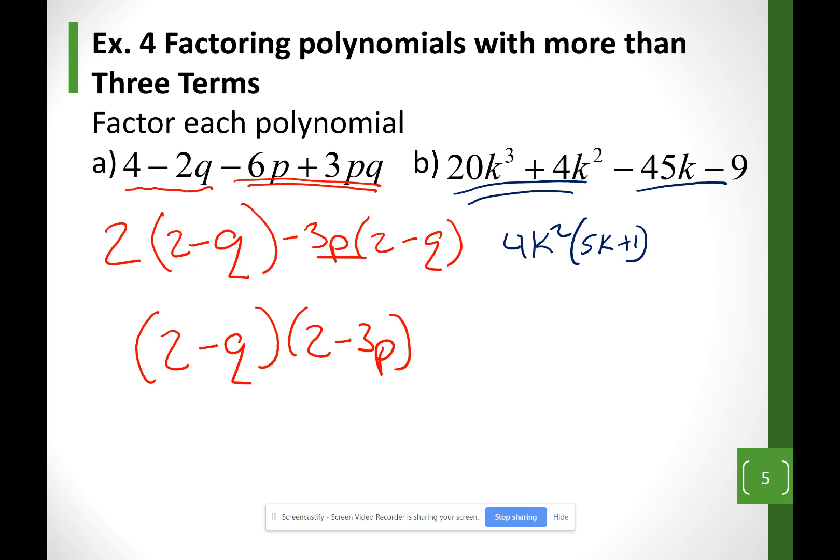Looking at the last two terms, let me factor out a negative 9 out, so I get 5K plus 1. My factors at the end will be 5K plus 1 and 4K squared minus 9.